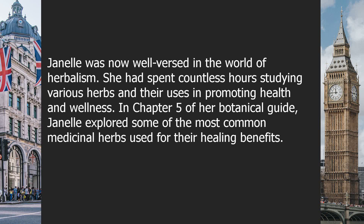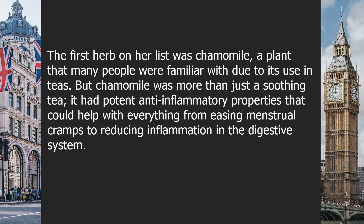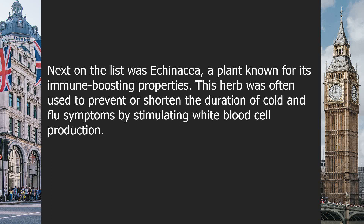Chapter five: Common Medicinal Herbs. Jainel was now well-versed in the world of herbalism, having spent countless hours studying various herbs and their uses in promoting health and wellness. In her botanical guide, Jainel explored some of the most common medicinal herbs used for their healing benefits. The first herb on her list was chamomile, a plant many people were familiar with due to its use in teas. But chamomile was more than just a soothing tea — it had potent anti-inflammatory properties that could help with everything from easing menstrual cramps to reducing inflammation in the digestive system.